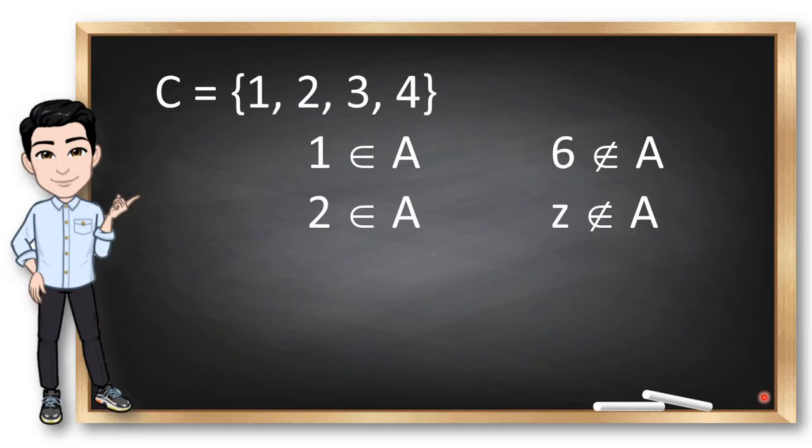In mathematics, we use numbers and their properties to form a set. In this example, C is a set containing 1, 2, 3 and 4. 1 and 2 are elements of set A. 6 is not an element of A because there is no 6 within the set. Z is a variable that could be any value. So, it's not an element of set A unless you see it here.